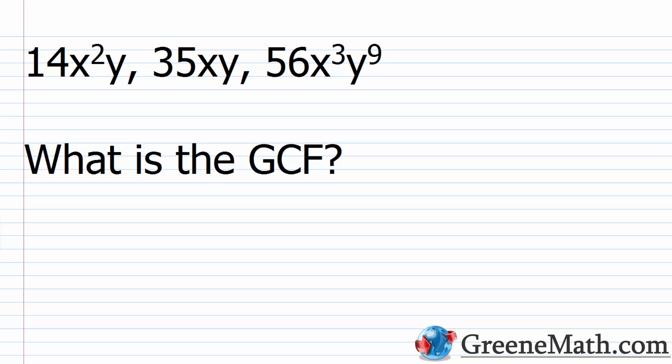Most of you would have learned this in either pre-algebra or your first algebra class — that could be Algebra 1 or a general algebra course. Essentially it's a very easy procedure, just something you might have forgotten. To find the GCF for a group of monomial terms, you want to first think about the number parts, and then the variable parts. The variable part is very easy; the number part takes a little work because you have to factor some things.